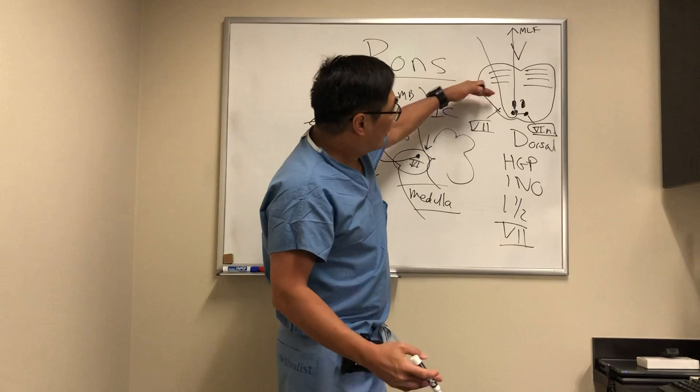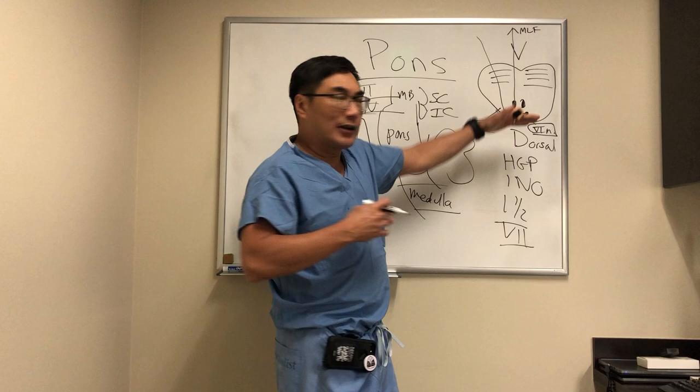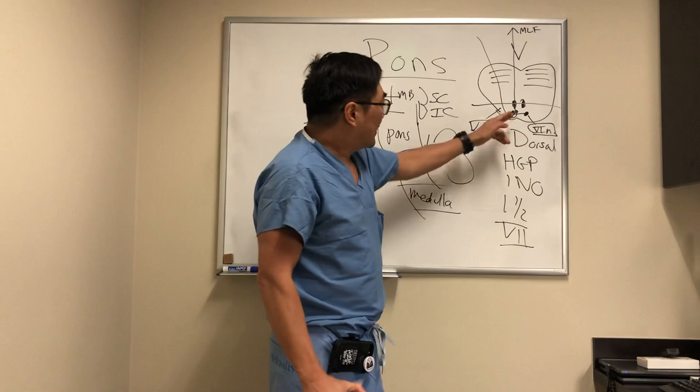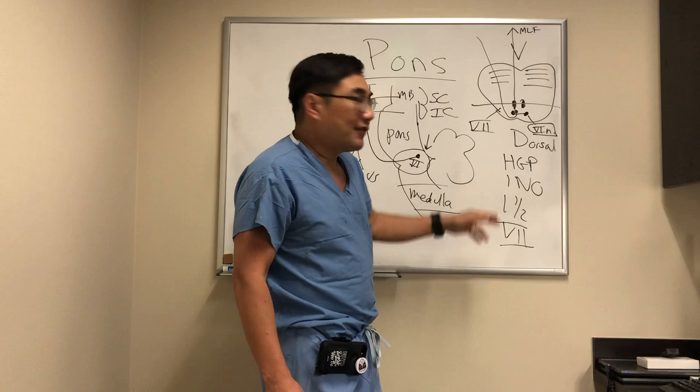The dorsal pontine syndromes come to neuro-ophthalmology primarily because they have eye problems: horizontal gaze palsy, sixth nerve fascicle causing a sixth nerve palsy, INO from the MLF — with or without seventh nerve involvement.